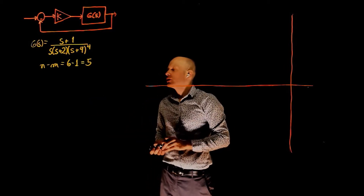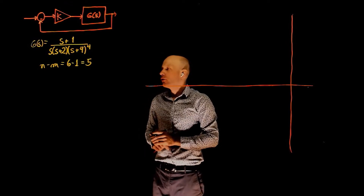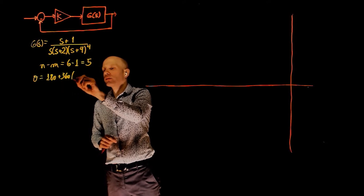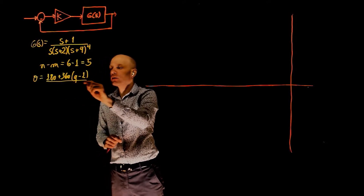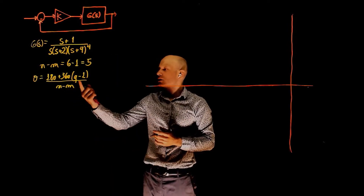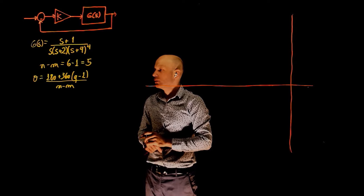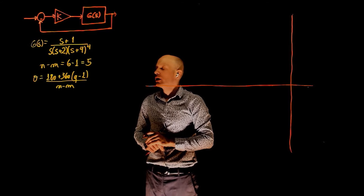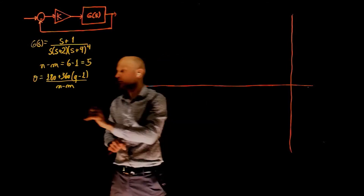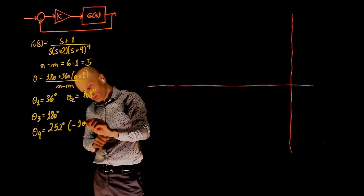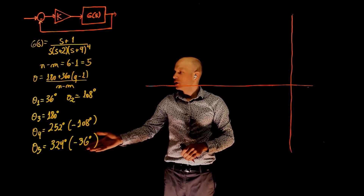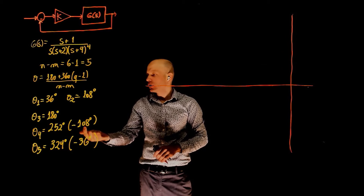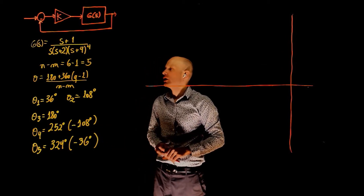Let's start by calculating the asymptotes that will take these poles to infinity. The formula is 180 plus 360 times (q minus 1), divided by n minus m, where q goes from 1 to 5. After calculating all the angles, we see that we have angles at 36, negative 36, 108, negative 108, and 180 degrees.